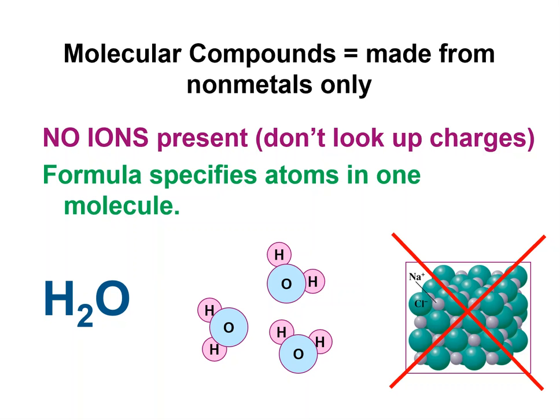Let's look at molecular compounds. We also call them covalent compounds. Remember, they're made of non-metals only. There are no ions present with these — they don't have charges. Do not look up the charges; it won't make sense most of the time if you do.